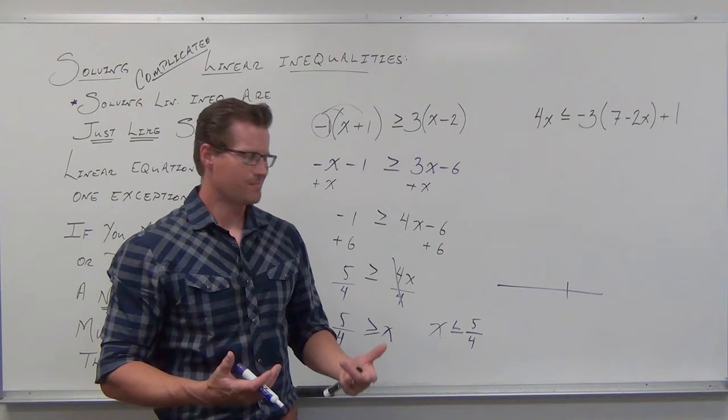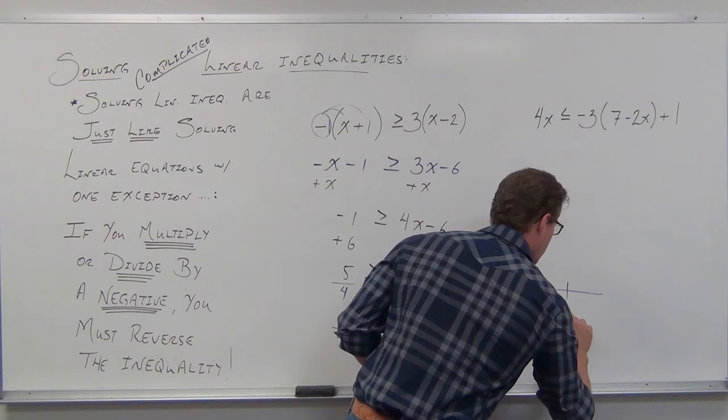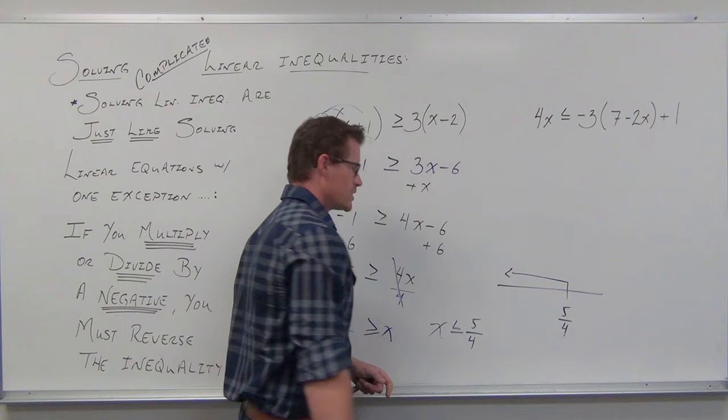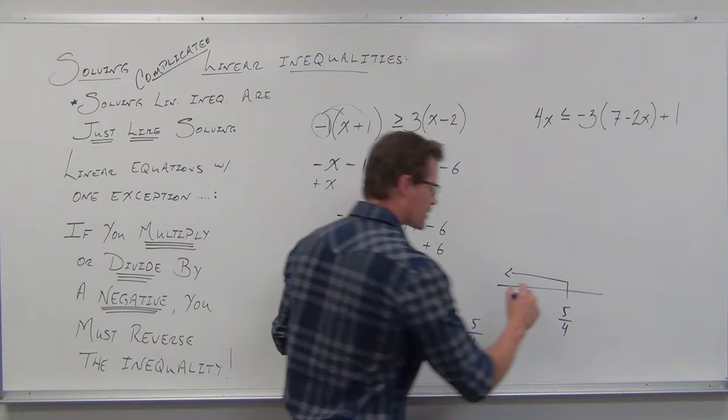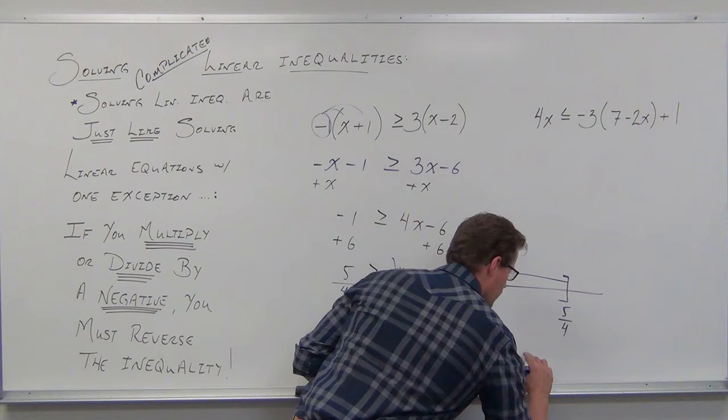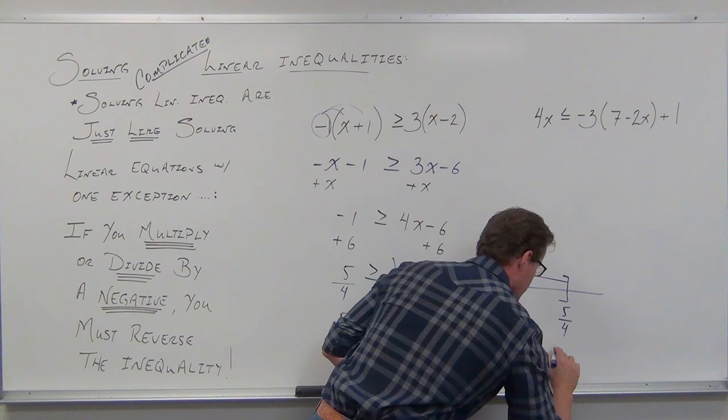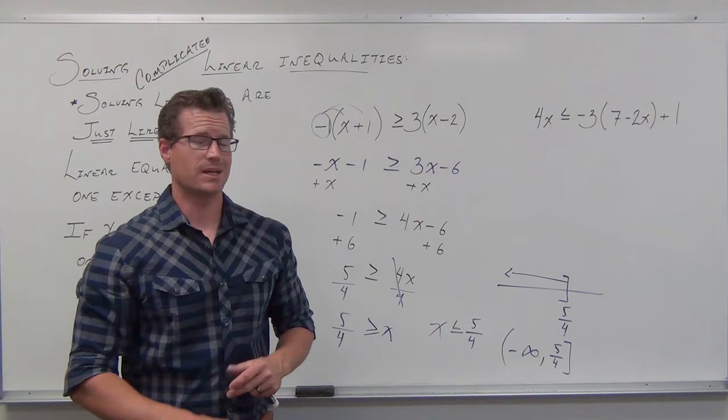We're going to finish this up with our number line and interval notation. Because I wrote this in order and we're dealing with a number line, my inequality tells us we should be graphing to the left — those are all the numbers less than 5/4. The equal sign says the 5/4 itself is included. So in interval notation, this interval starts all the way to the left, ends at 5/4, with a bracket. Always use parentheses for infinities.